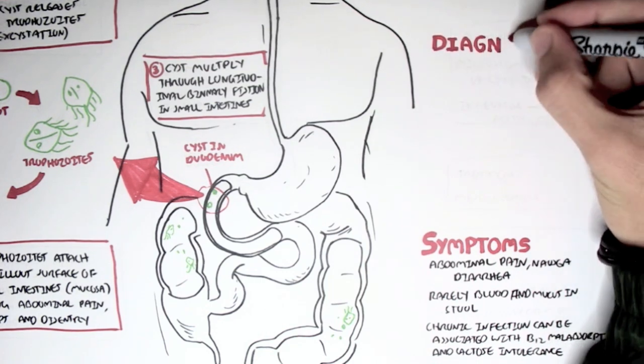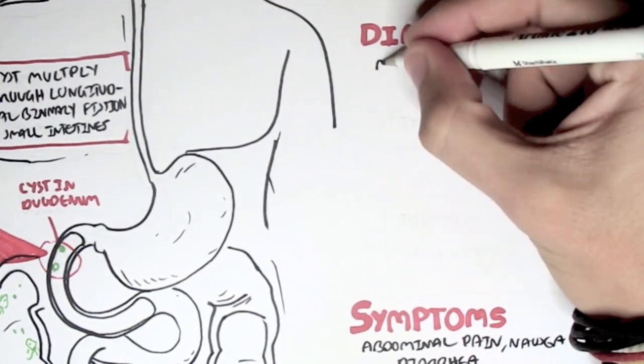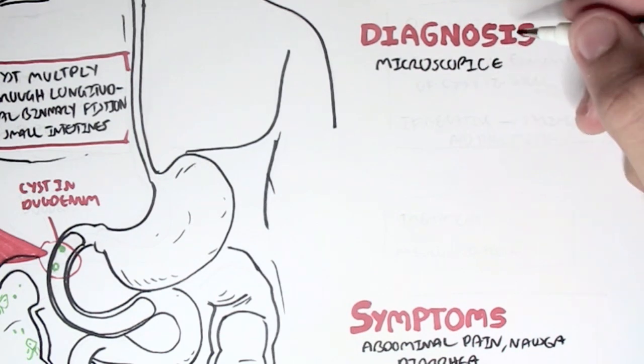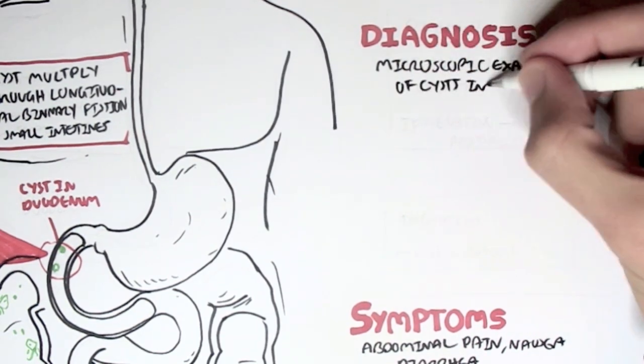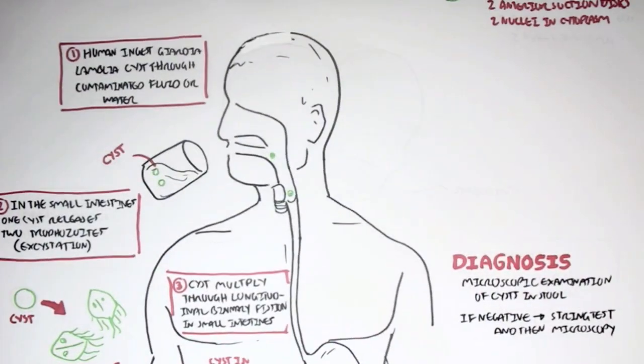To diagnose Giardiasis, we can use a microscopic examination of cysts in the stool, in the feces. But if this is negative and we still suspect the person is suffering from Giardiasis, we can use a string test and then microscopy.